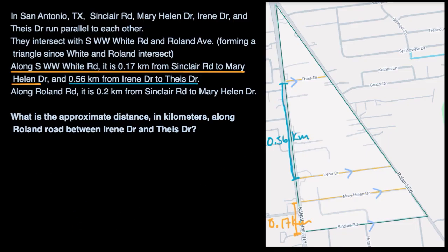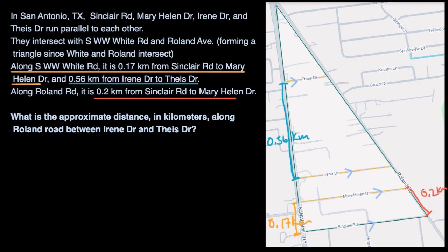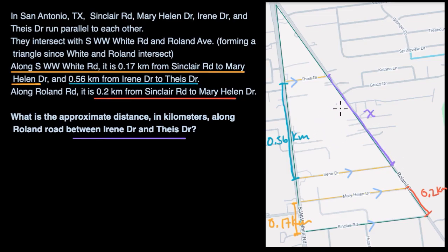All right, a lot of information here. Then they tell us along Roland Road it is 0.2 kilometers from Sinclair to Mary Helen Drive — so that's this distance right over here, 0.2 kilometers. The question asks: what is the approximate distance in kilometers along Roland Road between Irene and Theus Drive? So this is what we want to figure out. Why don't you pause this video and see if you can figure this out by yourself before we do this together.